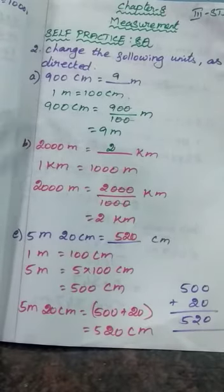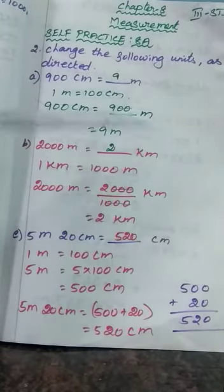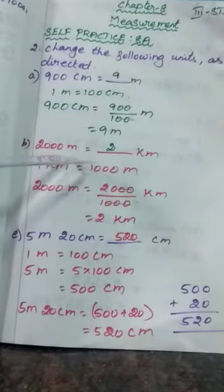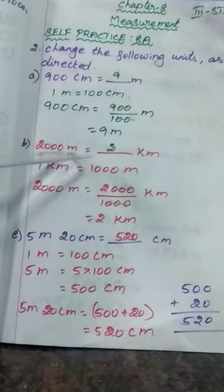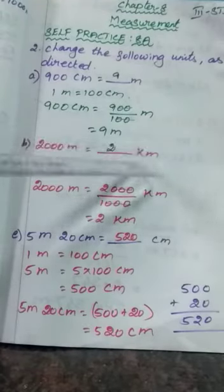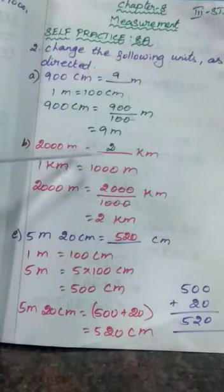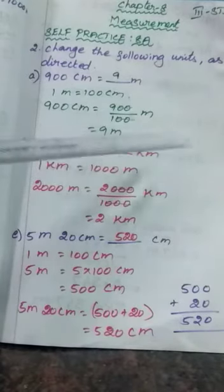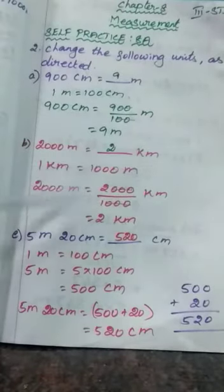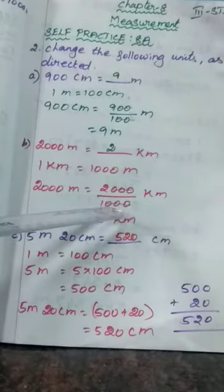Next sum, part B: 2000 meter equals dash kilometer. So what are the two units given? Meter and kilometer. Meter is the smallest unit. Convert the smallest unit into the biggest unit — smallest to biggest means you have to divide. Divided by which number? Write the formula connecting these two units: 1 kilometer equals 1000 meter. So 2000 meter equals 2000 divided by 1000.